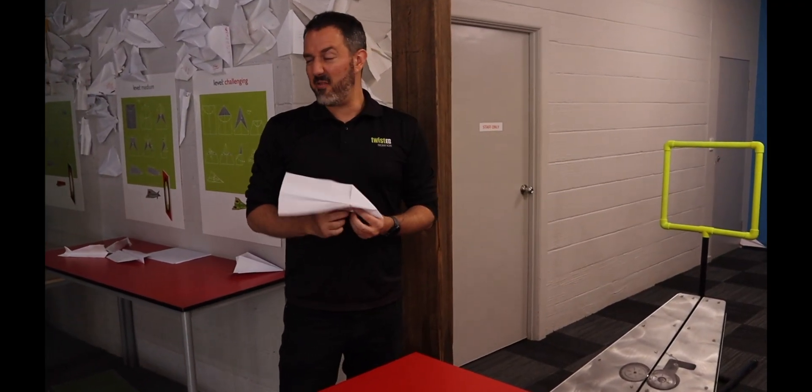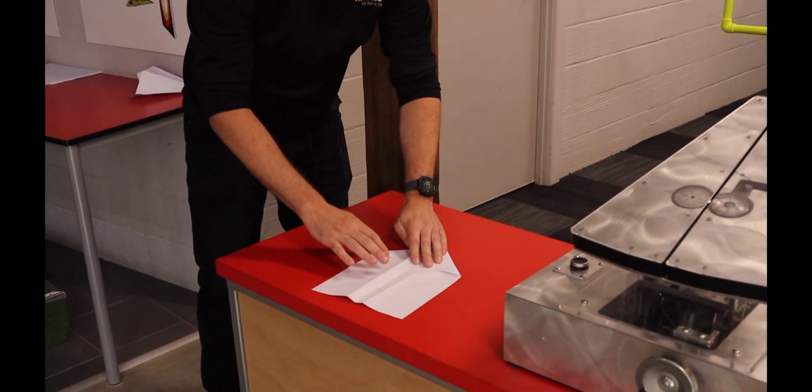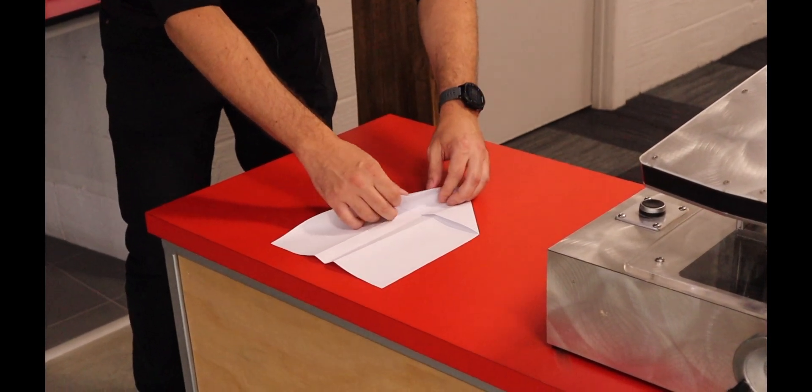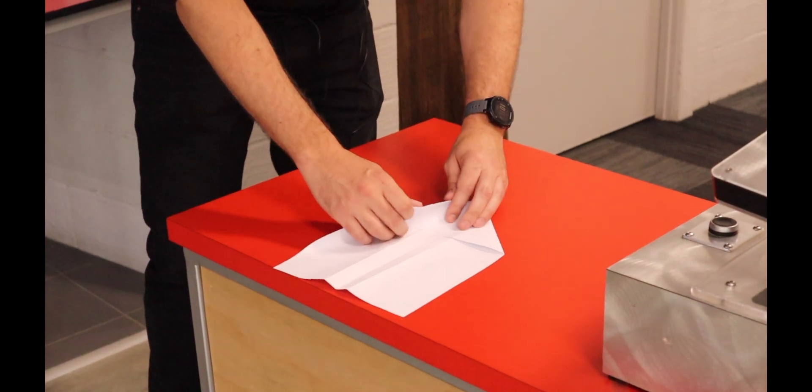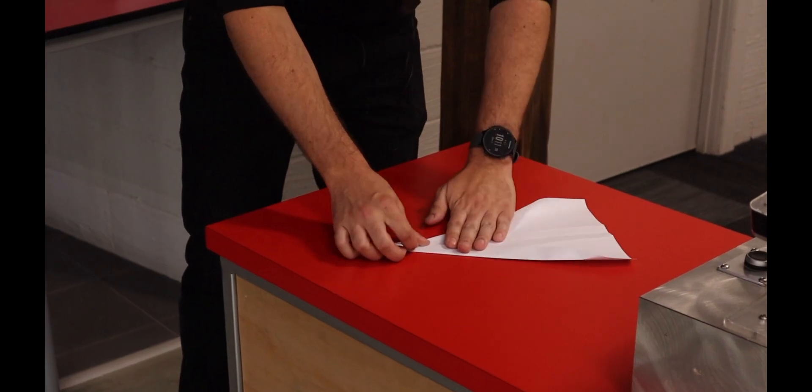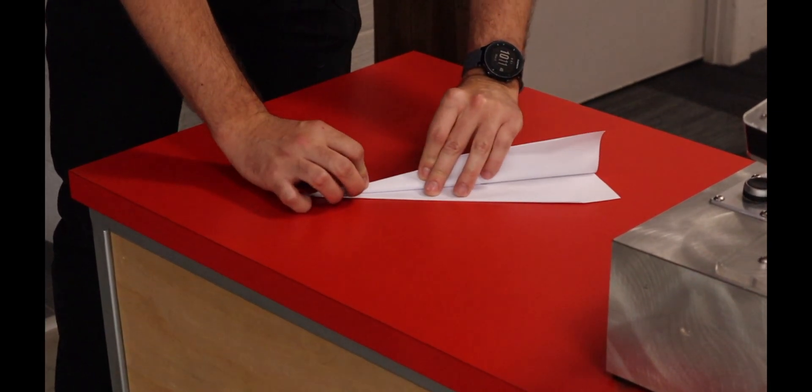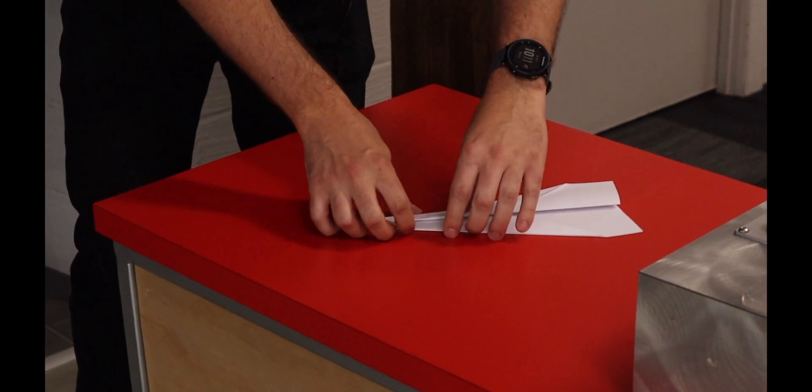Alright, so we've got our plane back and we need to make some improvements. What we're going to try instead is we're going to make more triangles. So we're going to open it back up to this and we're going to go down, make another triangle.